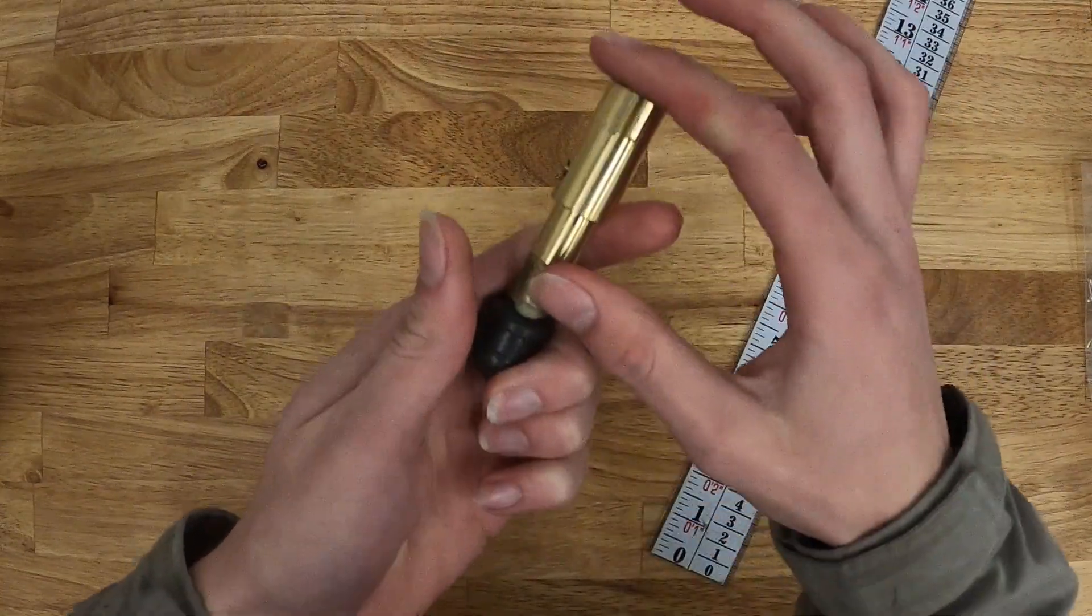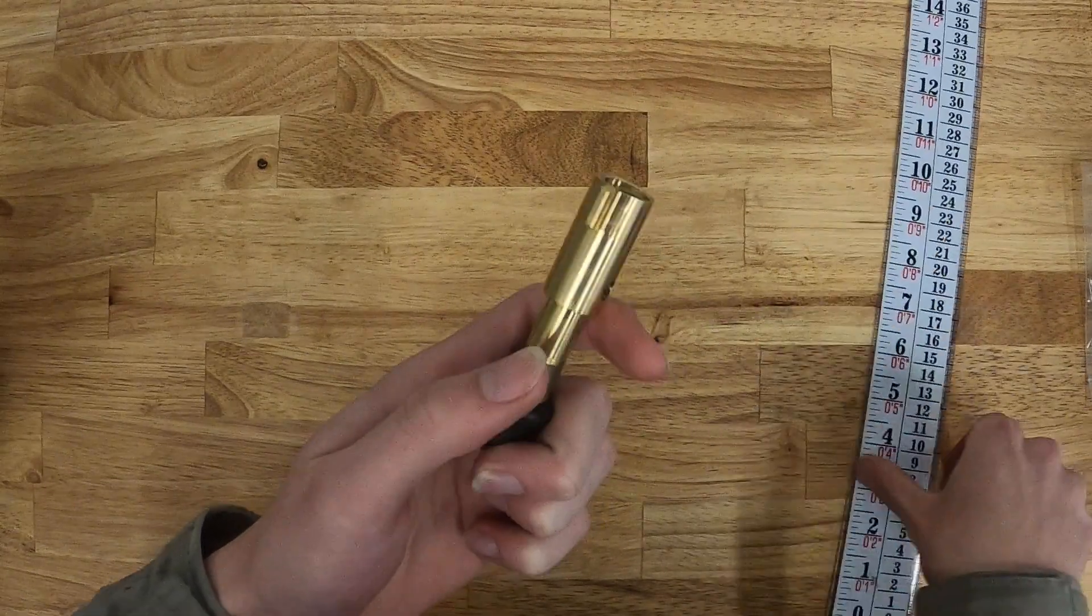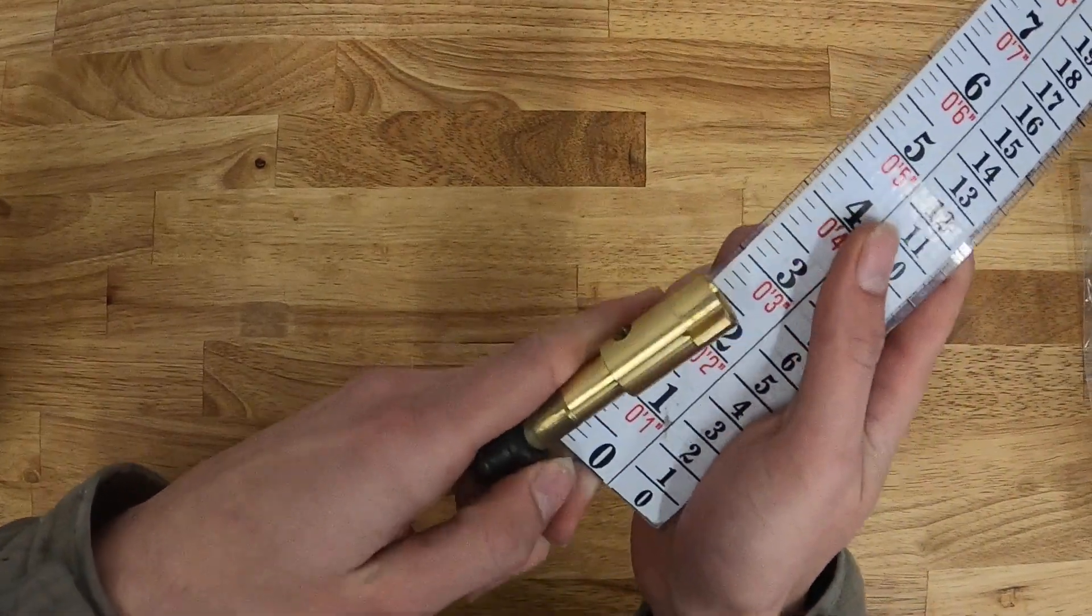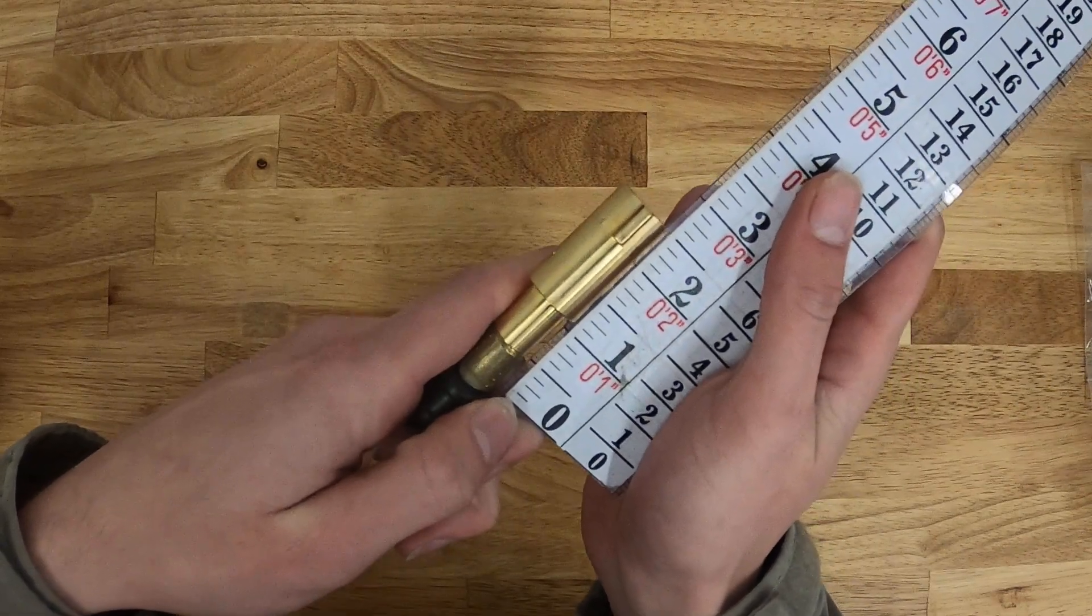And we might as well go ahead and measure the brass assembly as well. This assembly measures right at two inches.